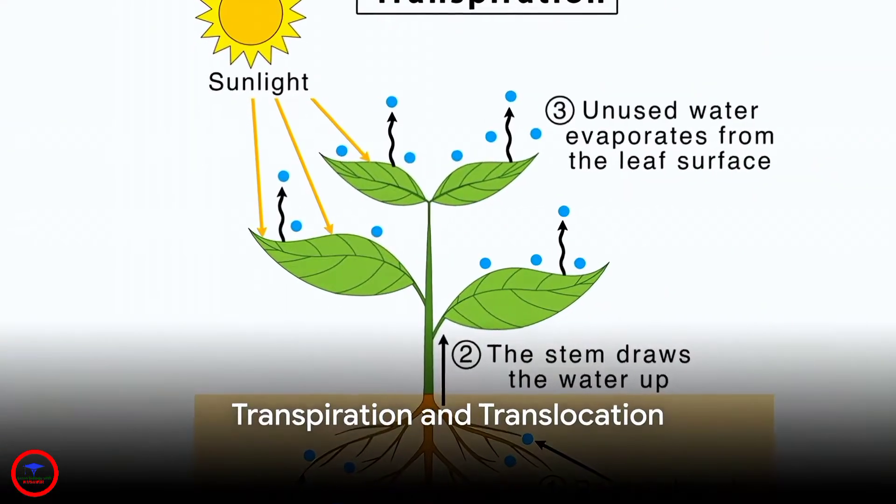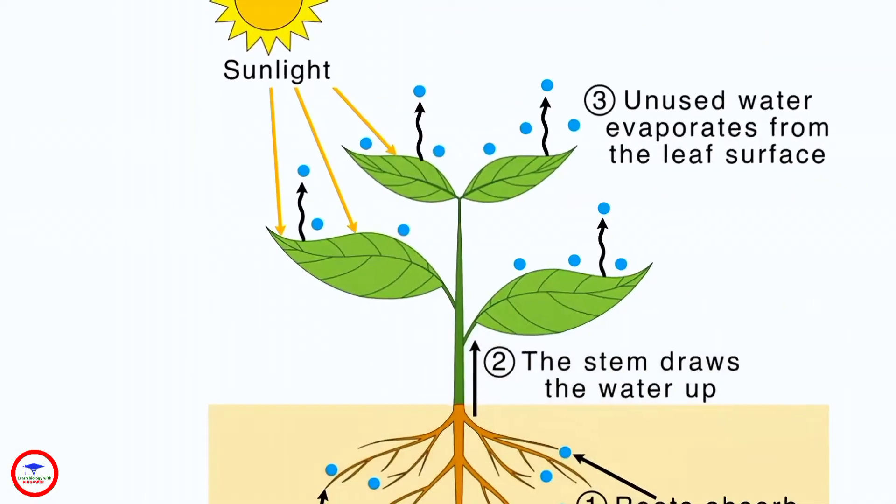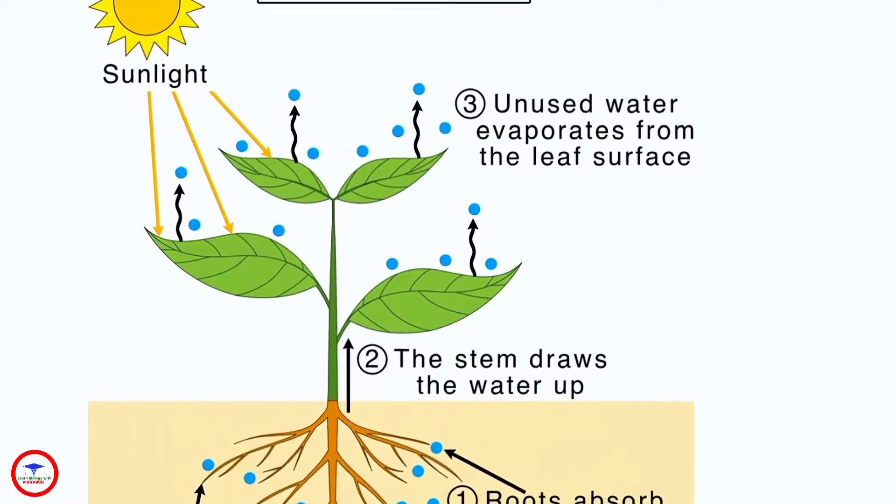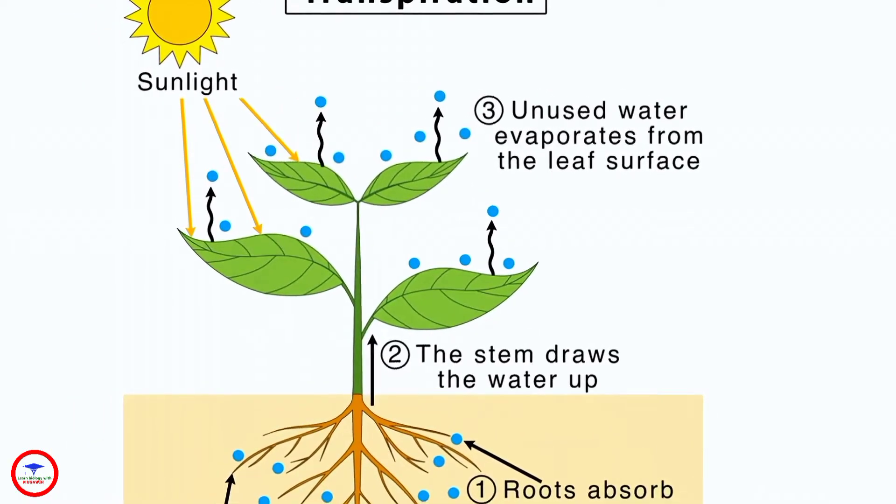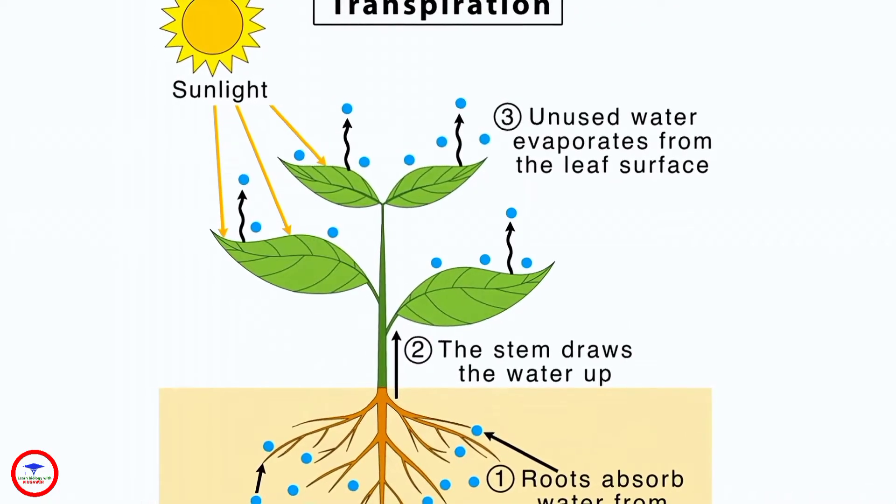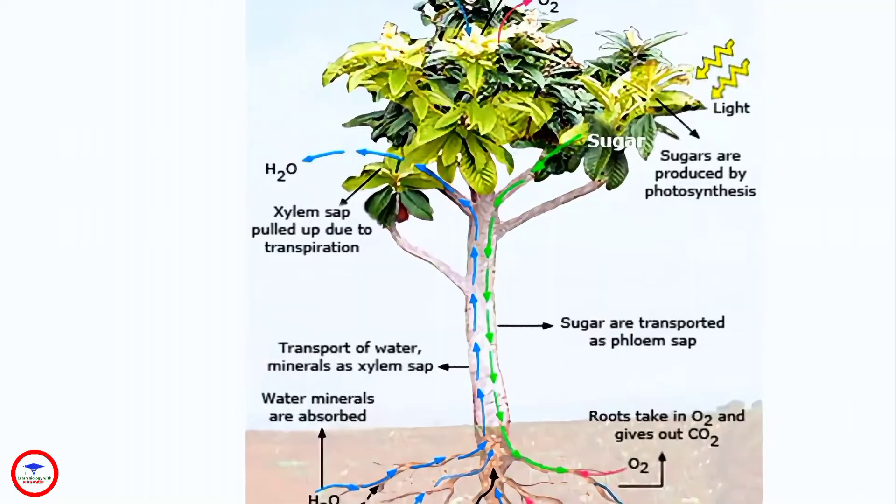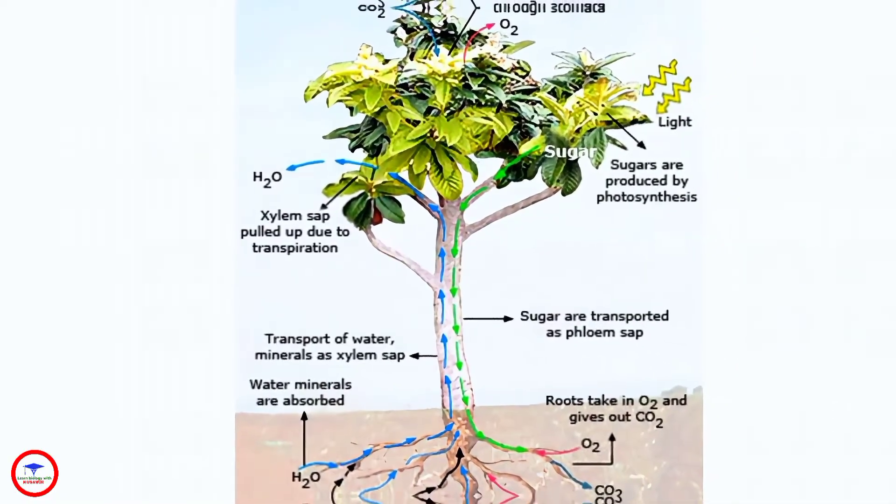Now let's talk about two crucial processes, transpiration and translocation. Transpiration is the process where water evaporates from the leaves, creating a pull that draws up water from the roots. Translocation is the movement of sugars from leaves to other parts of the plant.